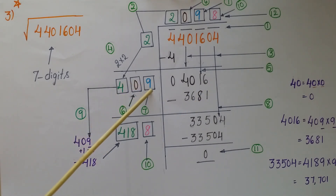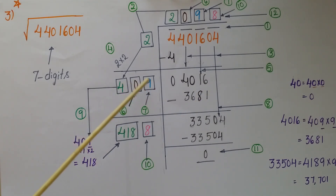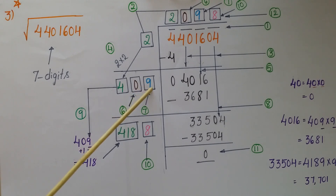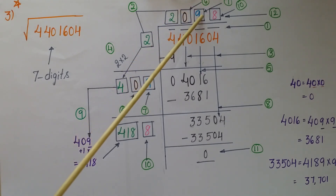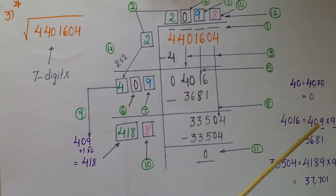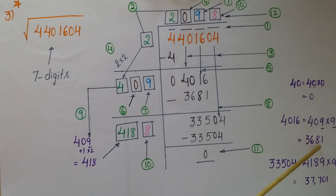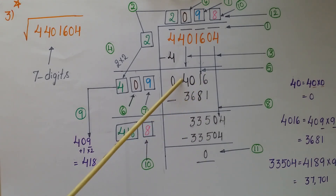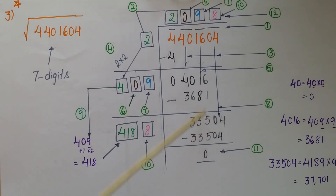Now assume a digit for the divisor 40_. Try 9: 409 × 9 = 3681. Write 3681 below 4016 and subtract: 4016 − 3681 = 335.